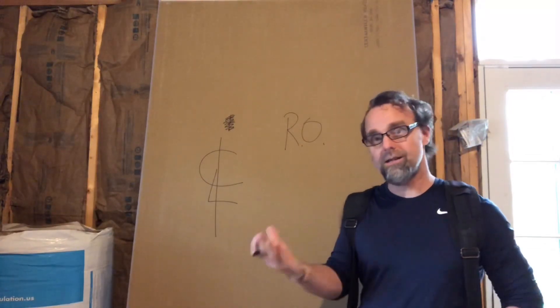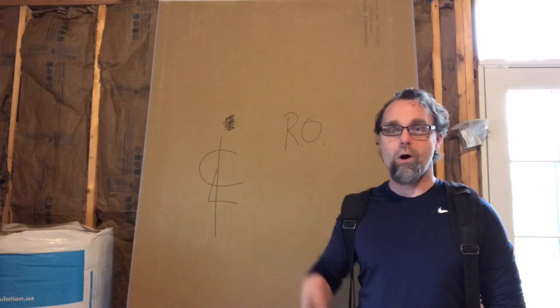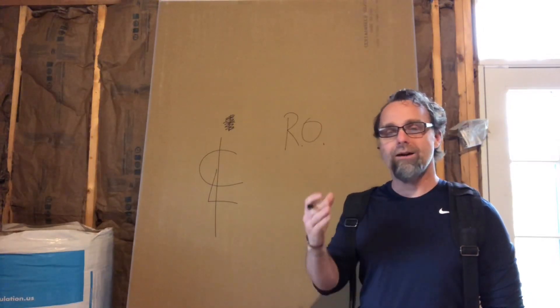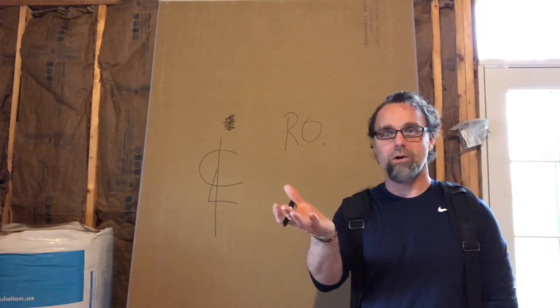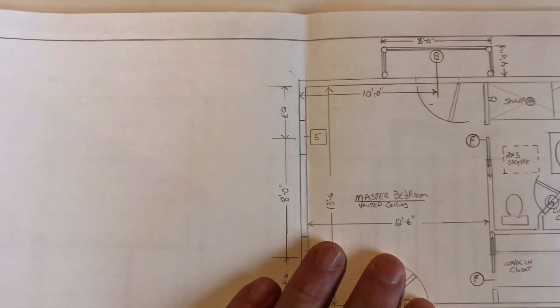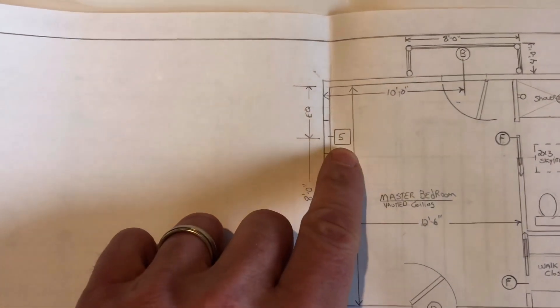You'll hear the term 'RO' on a job site — 'what's the RO?' — and you'll see it on a set of blueprints. That's why we're going over this term; it's important to know. We can get the measurements for the rough openings from a few different places. The easiest place is right off of the blueprints.